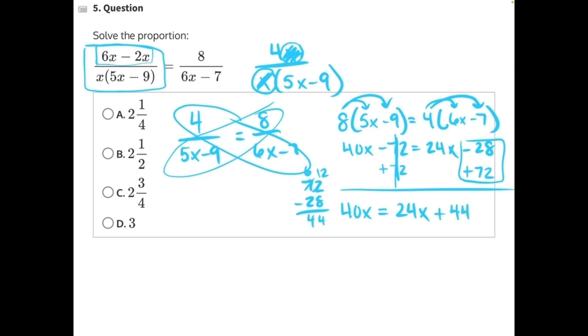Now 24 is being added to 44, so we can subtract 24 from both sides. These 24s will cancel, leaving us with 16x equals 44. And the last step, 16 is being multiplied to x. So we need to do the opposite, which is dividing both sides by 16.